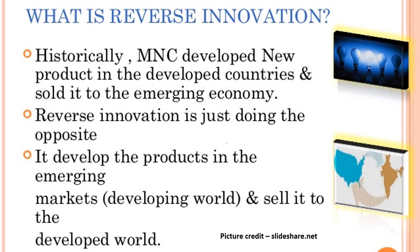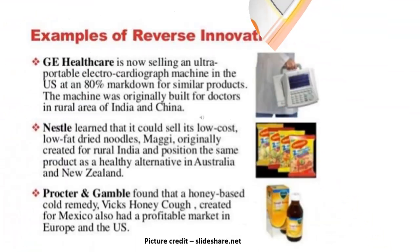What is reverse innovation? Historically, multinational companies developed new products in developed countries and sold them to emerging economies. Reverse innovation does just the opposite — it develops products in the emerging markets, the developing world, and sells them to the developed world. Examples: GE Healthcare is now selling an ultra-portable electrocardiograph machine in the U.S. at an 80% markdown, originally built for doctors in rural areas of India and China. Nestle learned it could sell its low-cost, low-fat dried noodles, Maggi, originally created for rural India, as a healthy alternative in Australia and New Zealand. Procter & Gamble found that a honey-based cold remedy, Vicks Honeycough, created for Mexico, also had a profitable market in Europe and the USA.